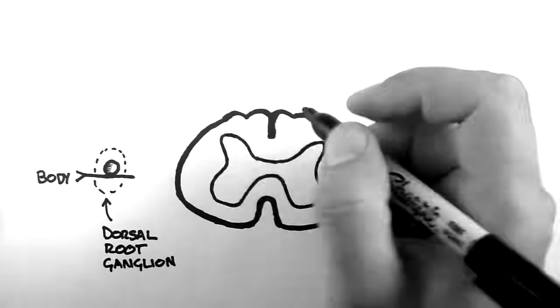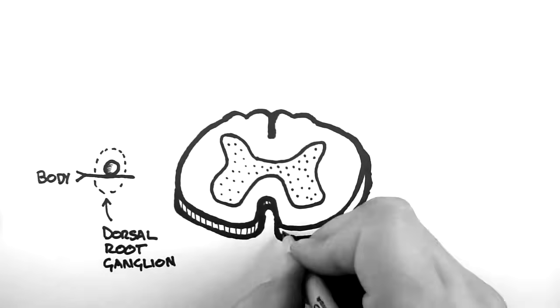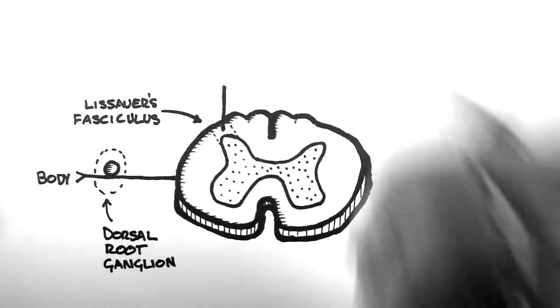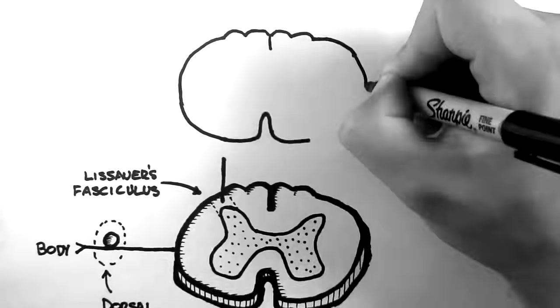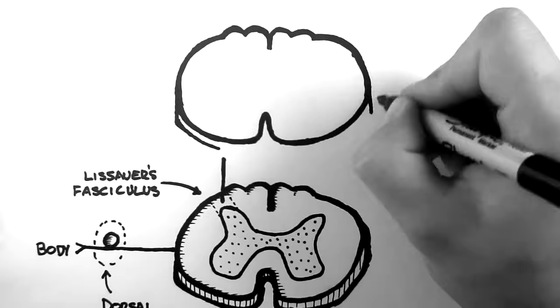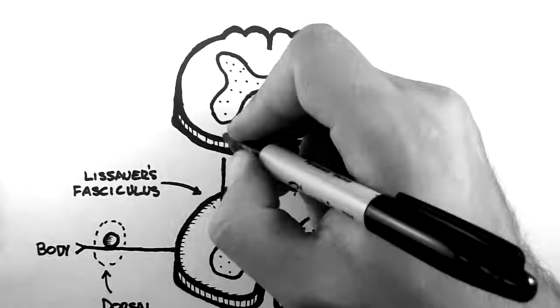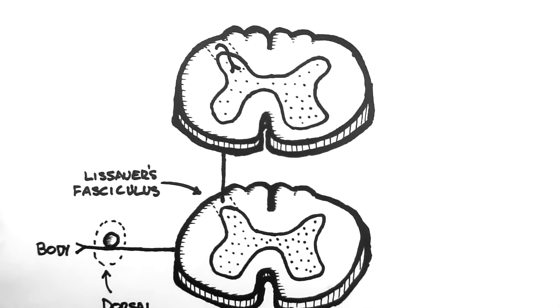Now here is a slice of the spinal cord. And here is Lissauer's fasciculus. The spinothalamic tract enters the spinal cord and ascends or descends one or two levels within Lissauer's fasciculus. Then it synapses onto a cell body in the dorsal horn of the grey matter. The dorsal horns are the back parts of the butterfly wings of the grey matter.